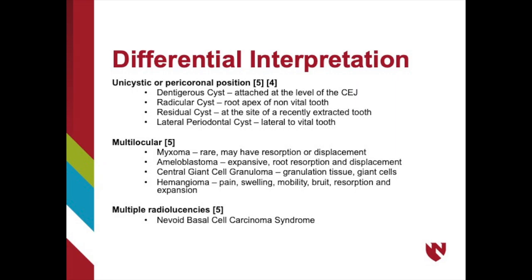If the lesion presents in a unicystic or pericoronal position, you will want to consider the dentigerous cyst, radicular cyst, residual cyst, and lateral periodontal cyst. A dentigerous cyst will always be attached at the level of the CEJ to an unerupted tooth. A radicular cyst will be located at the root apex of a non-vital tooth. A residual cyst will always be at the site of a recently extracted tooth. A lateral periodontal cyst is always located lateral to a vital tooth.